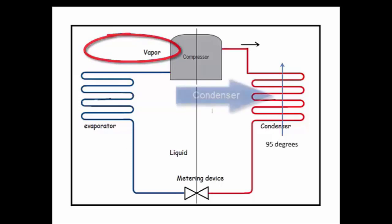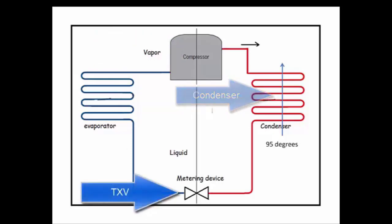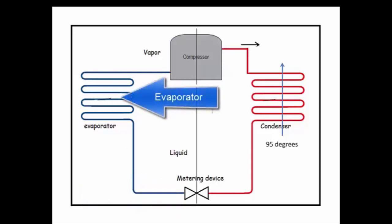In this system, we have the compressor, the condenser, a metering device which is a TXV metering device, and an evaporator. The outdoor air is 95 degrees. So let's take a look at our worksheet and we'll go from there.